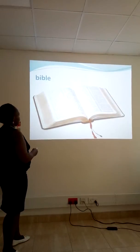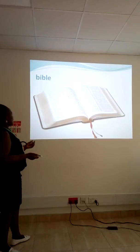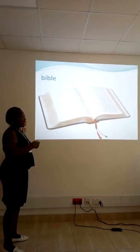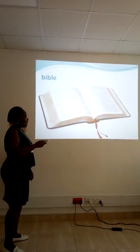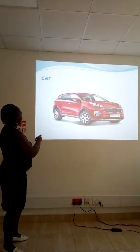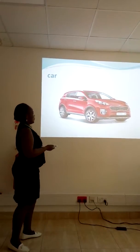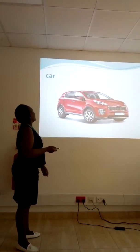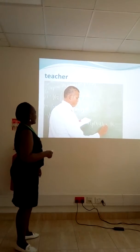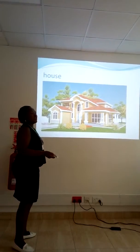Let's have a look at the pictures that we have which illustrate what common nouns are. In the first example, we have a Bible, which refers to any Bible — it is a general name for any Bible, though we have specific names for that. We also have a car, which is a general name for this particular vehicle — we have not specified the type. Then we have teacher, and next we have house, referring to any house.